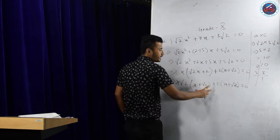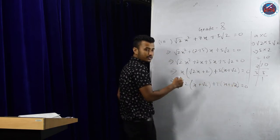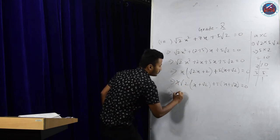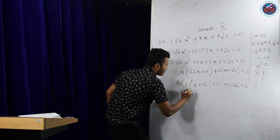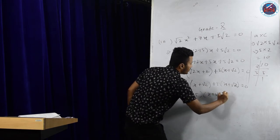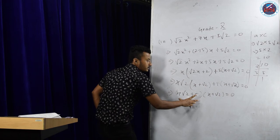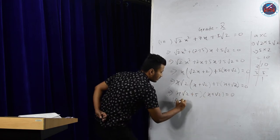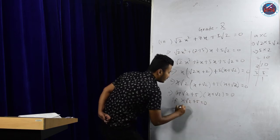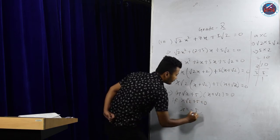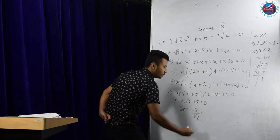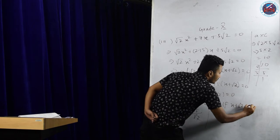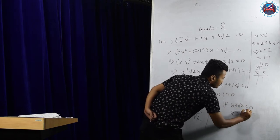The bracket terms should always come out equal. So this becomes (x root 2 plus 5)(x plus root 2) equals zero. Same as before: equate each bracket to zero. If x root 2 plus 5 equals zero, then x equals minus 5 by root 2 — this is your first root. Or, if x plus root 2 equals zero, then x equals minus root 2. These are the two roots of the equation.